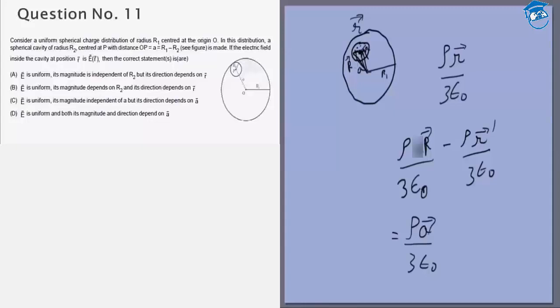So we know that inside the cavity, E is uniform and both its magnitude and direction depend only on a, not on anything else. Not on r₂, not on r₁, not on this position vector r'. It only depends on the position of the center of this cavity with respect to the center of this sphere. So my answer in this case will be D.